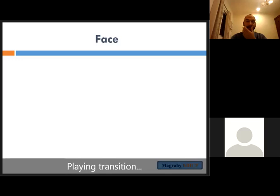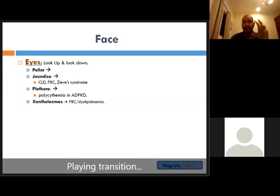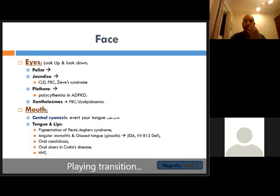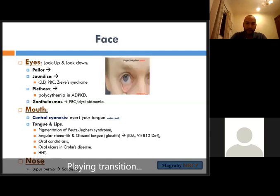After finishing the neck, go to the face — check for pallor, ask the patient to look up and down for jaundice, check for polycythemia in polycystic kidney disease. Xanthelasma is significant because it matches with primary biliary cirrhosis: if a female has itching, jaundice, hepatomegaly, and xanthelasma, this is a matching criteria for primary biliary cirrhosis. Then go to the nose and mouth to check for cyanosis, tongue and lip changes, pigmentation, angular stomatitis, candidiasis, ulcers. Check the nose for lupus pernio or sarcoidosis — sarcoidosis is an infiltrative disease that can give hepatosplenomegaly and lymph node enlargement.